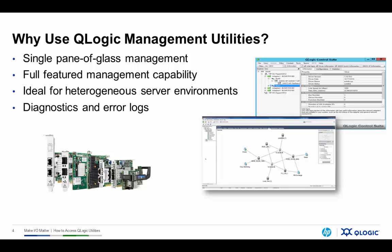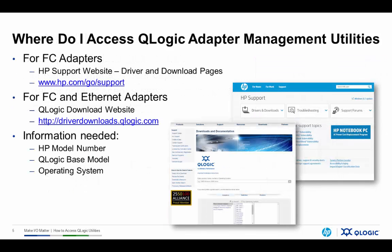This is not to say that HP utilities such as the converged network utility, storage essentials, and other software products from HP are not important. You just need to be aware that QCC and QCS do in fact work with HP branded adapters provided by QLogic. For fiber channel adapters, you can download QCC from the HP support website. For fiber channel and Ethernet adapters, you can download both QCC and QCS from the QLogic driver and download page. To access, you'll need the HP model number of your adapter and/or the QLogic base model number, as well as the operating system you're looking for. The QLogic base model number can be found on the QLogic line card or in the QLogic interactive configurator at the QLogic HP microsite at www.qlogic.com/go/hp.